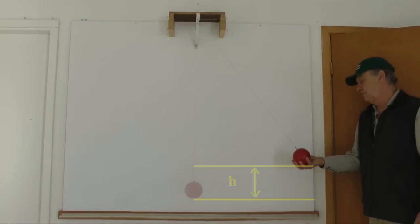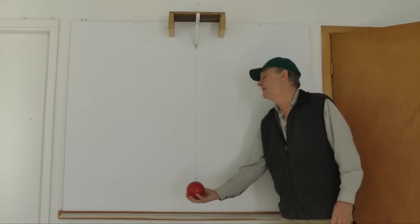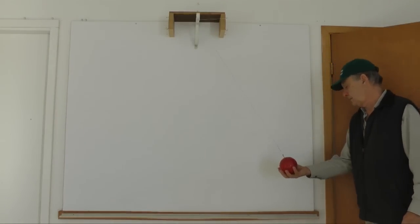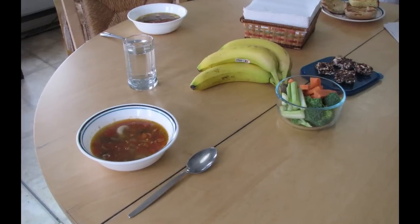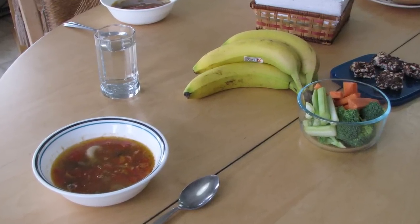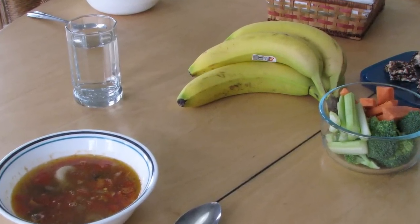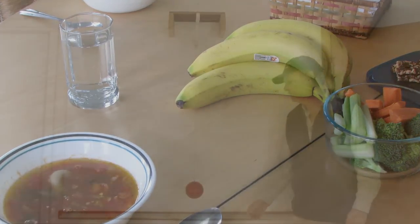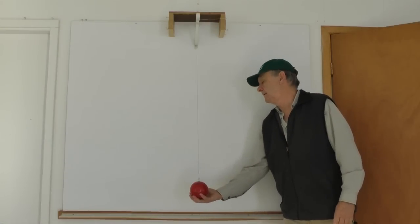But, if energy can't be created or destroyed, where did the energy come from to raise the bob? It came from me. The chemical energy from food I have consumed has been converted to gravitational potential energy. I have given up some of my chemical energy to this pendulum system.